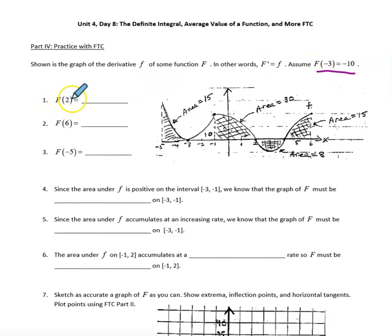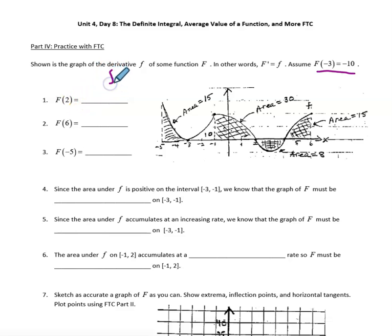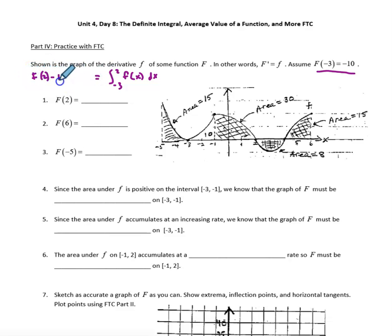We want big F of 2. Basically, you're given big F of negative 3 and you want big F of 2, so we're going to set up an integral from negative 3 to 2 of little f. By the fundamental theorem of calculus, that has to equal big F of 2 minus big F of negative 3. I've just restated the first part of the fundamental theorem of calculus.